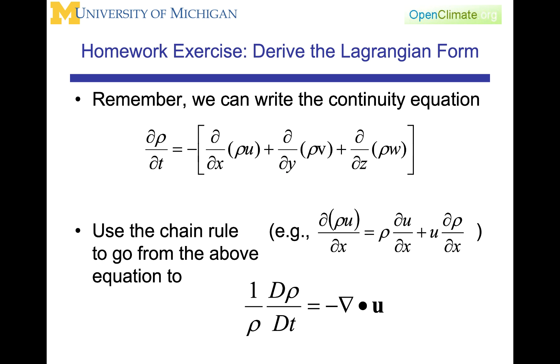The homework exercise that you will receive will ask you to derive the Lagrangian form of the continuity equation, which is given down at the bottom. The one over rho, big d rho dt, is equal to minus del dot u. And notice that's the divergence of the velocity, and the divergence of the velocity should intuitively become how is the volume stretching or contracting a particular interface. The homework exercise will be to derive the Lagrangian form, starting with the Eulerian form. I will just say in advance, to use the chain rule to go from the above equation to the equation below.